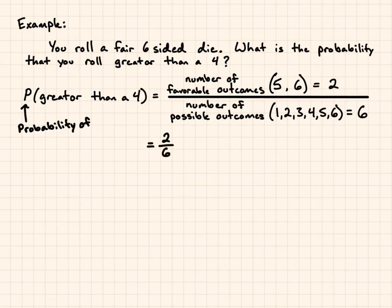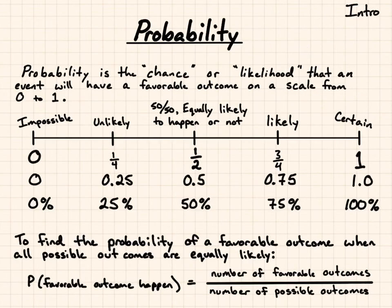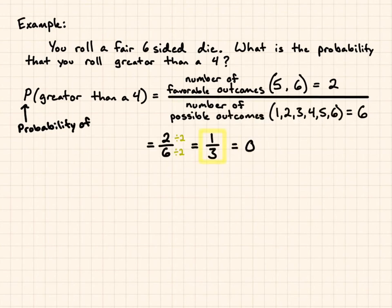So, 2 over 6. Whenever you look at these, simplify your fractions. You can see that 2 and 6 are divisible by 2. So, I get 2 divided by 2 becomes 1, and 6 divided by 2 becomes 3. I get 1 third as my probability. If you look back at our 1 third, it would be right around here. That's fairly unlikely to happen. 1 third is the same as 0.3 repeating, and 33.3%.